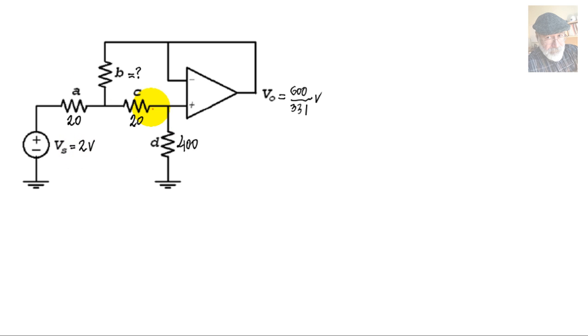Out of the four resistors, three were given: 20 ohms, 20 ohms, and 400 ohms in this case. We need to find what is the value of B, of this resistor up here. How do we do that?